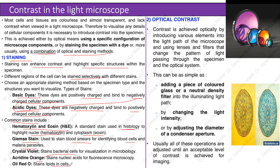Optical contrast is achieved by introducing various elements into the light path of the microscope and using lenses and filters that change the pattern of light passing through the specimen. This can be as simple as adding a colored glass or neutral density filter into the illuminating light path, changing the light intensity, or adjusting the diameter of the condenser aperture. Usually all of these operations are adjusted until an acceptable level of contrast is achieved for imaging.